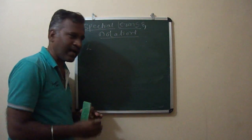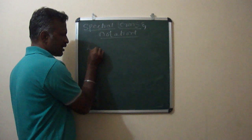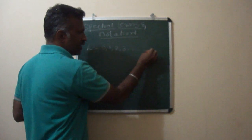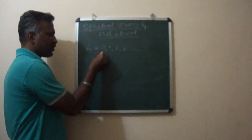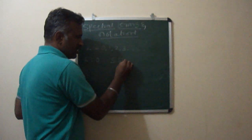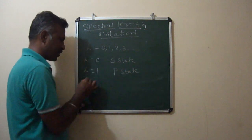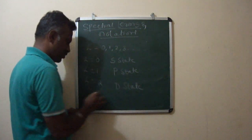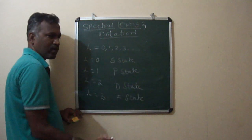There are quantum numbers associated with the vector atom model. The values for L range from 0, 1, 2, 3, and so on until N minus 1, where N is the principal quantum number. For L equals 0, we have the S state. For L equals 1, we have the P state. For L equals 2, we have the D state. For L equals 3, we have the F state. We know these as S, P, D, F orbits, but here written in capital letters.